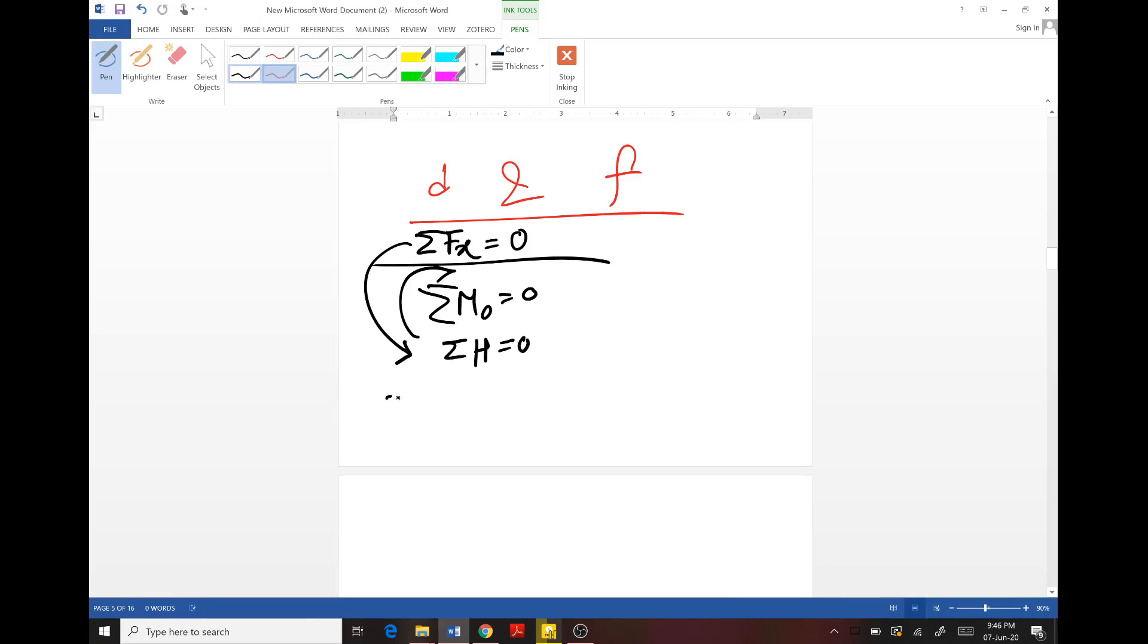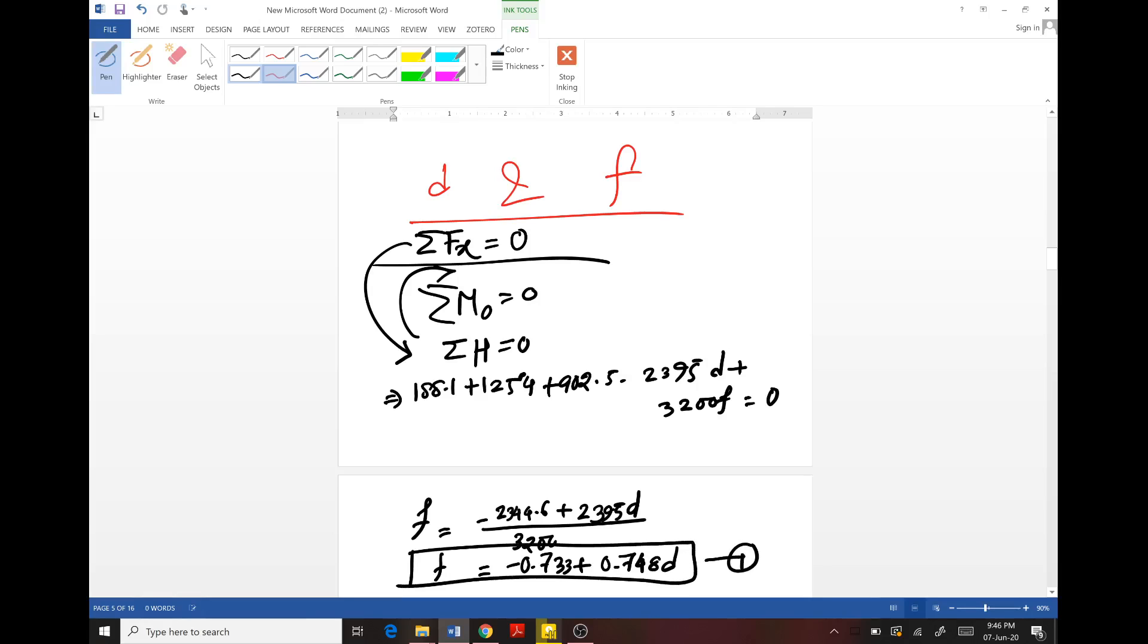Now for this one we can write summation of H equals zero: 188.1 plus 1254 plus 902.5 minus 2395D plus 3200F equals zero. So F equals (minus 2344.6 plus 2395D) divided by 3200, which is 0.748D. This is the value of F with respect to D. Let's take it as equation one.